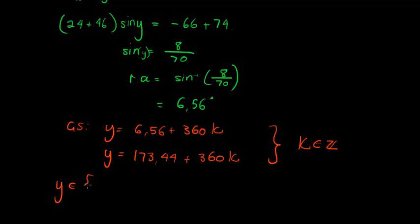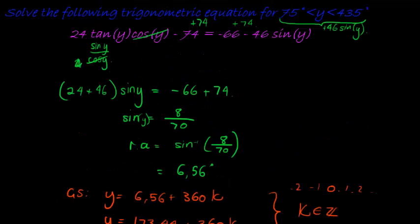And now, in order to find my solutions, y can be a number of solutions. What I am going to do is take k from 0, 1, 2, etc., negative 1, negative 2, and as soon as I fall outside of my interval, I stop.